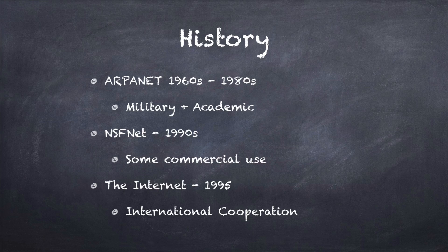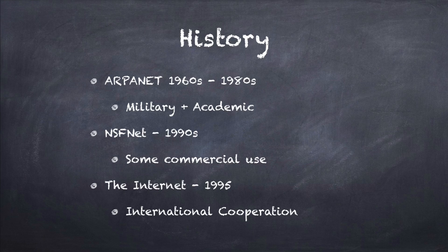That network grew as more services, schools, and military installations were added. At the same time, other countries started developing their own versions, using different protocols for computers to talk to each other. Then in the early 1990s, commercial companies started coming in — they had computers and wanted to hook into the network. Countries also wanted to talk to each other, so they had to come up with new standard protocols. Once all that was set up and computers all over the world could understand each other, we had the internet — the result of international cooperation.